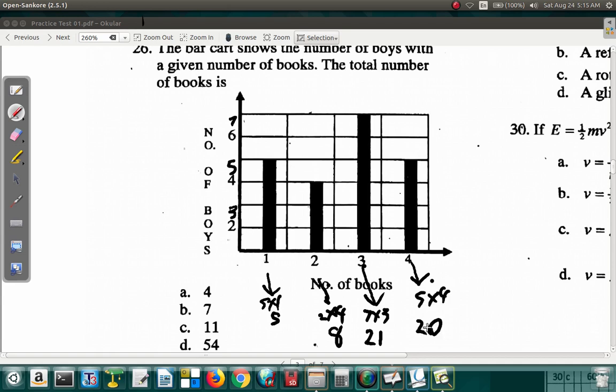If we add them up now, 20 and 21, that's 41. 41 and 8 gives you 49, plus 5, 54. So it will be 54. All right, D. That's question 26.